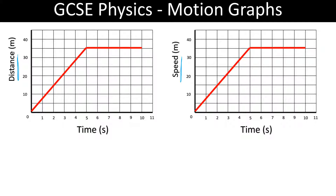How we use these is slightly different, but both involve basically using gradients and areas. From maths, the gradient of a straight line is y equals mx plus c. In this case there's no intercept because the line goes through the origin, so it's just y equals mx, and the gradient is calculated as the change in y over the change in x — rise over run, as some people say.